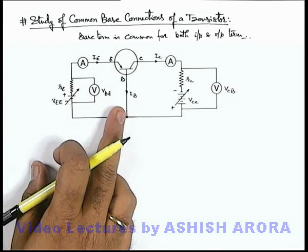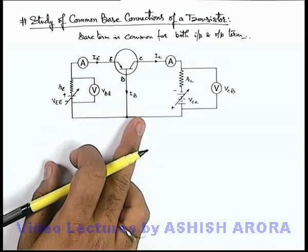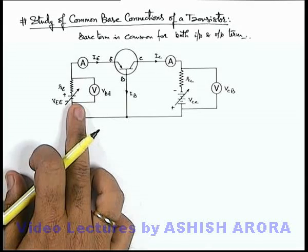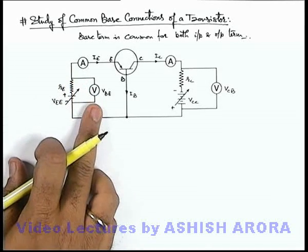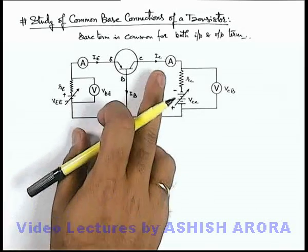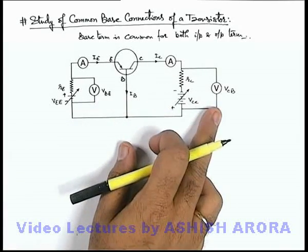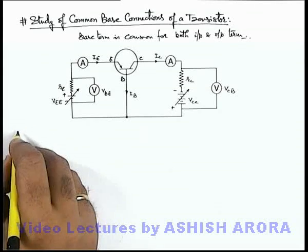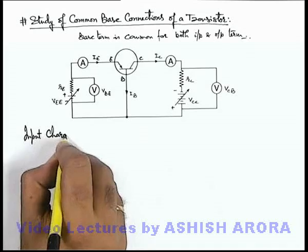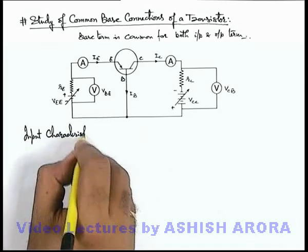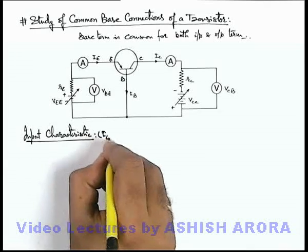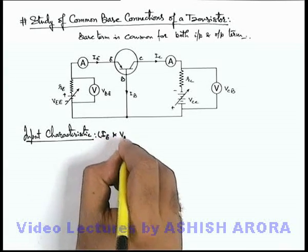So here we draw two different types of characteristics for a transistor. One is the input characteristic, which is the variation of emitter current with base-emitter voltage. The other is the output characteristic, which is the variation of collector current with base-collector voltage. Let's plot both of these. We first talk about the input characteristic — the variation curve plotted between IE and VBE.